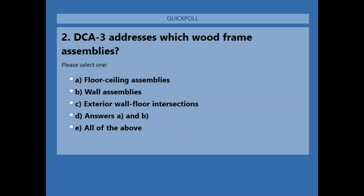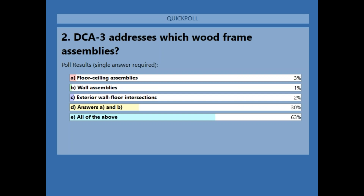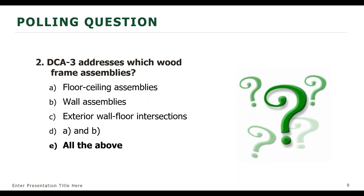DCA3 addresses which wood frame assemblies? The options are: A — floor ceiling assemblies; B — wall assemblies; C — exterior wall floor intersections; D — answers A and B; or E — all of the above. Results show 63% say all of the above, and 30% say answers A and B. The real answer is E, all of the above. The exterior wall floor intersection details are the newcomer to DCA3, so some may have missed that in the introduction.